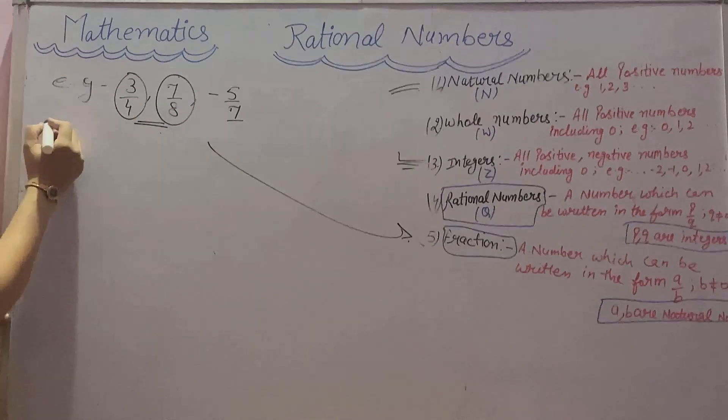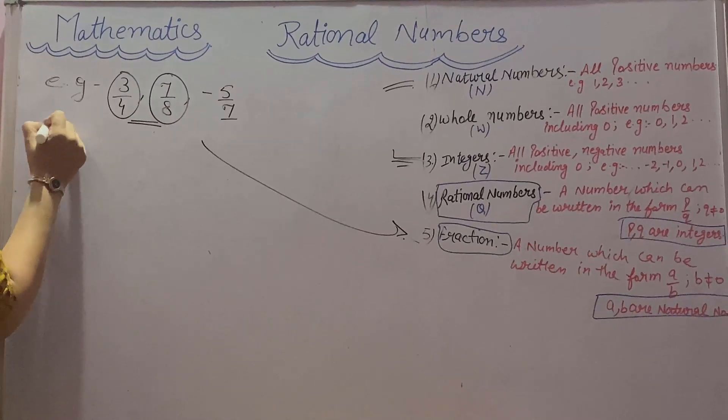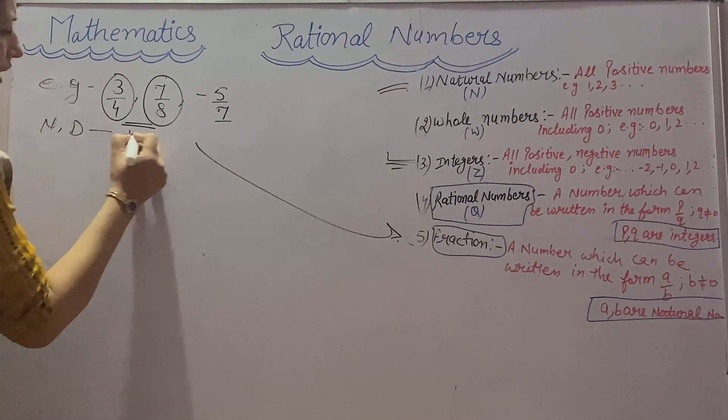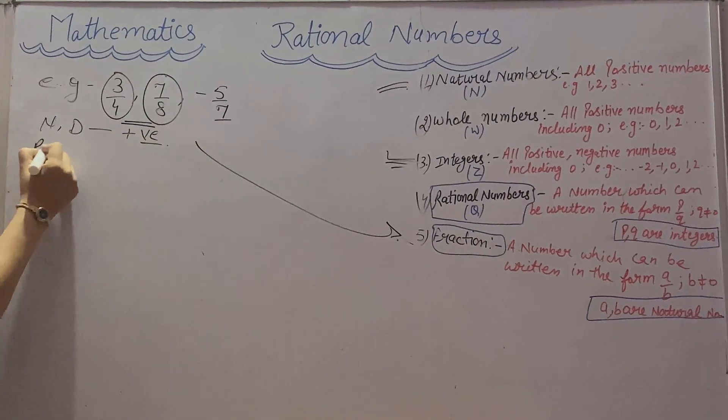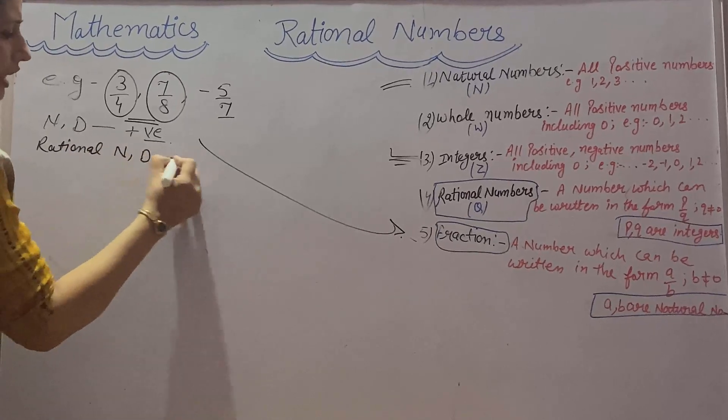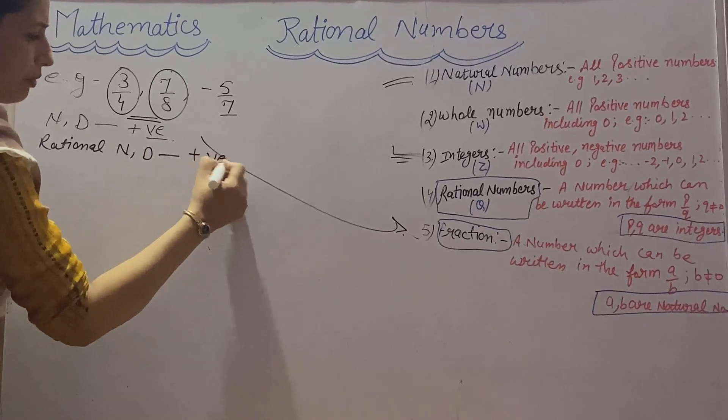Because in the fraction numerator and denominator are all natural numbers, that is positive numbers. And in the rational number numerator and denominator can be negative and positive numbers.